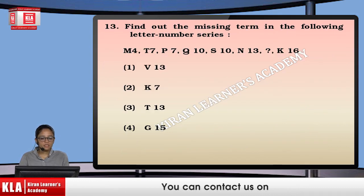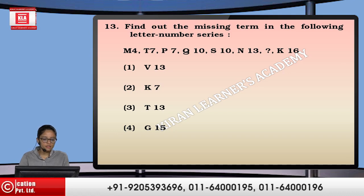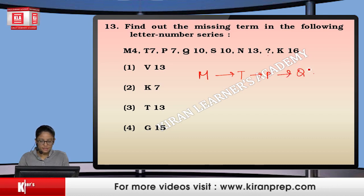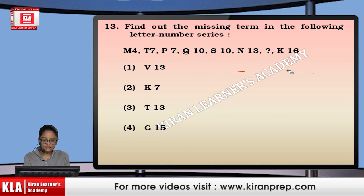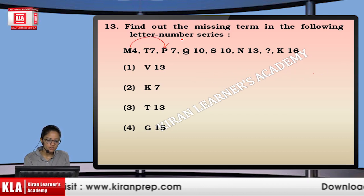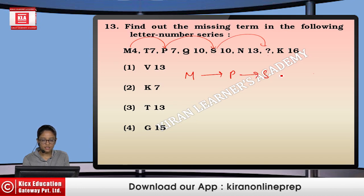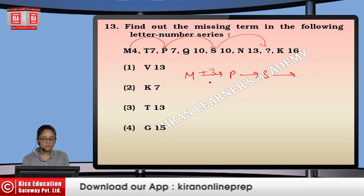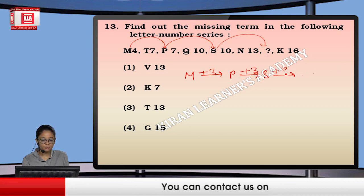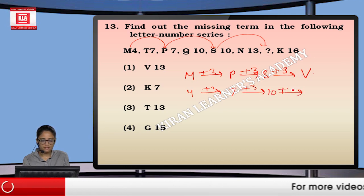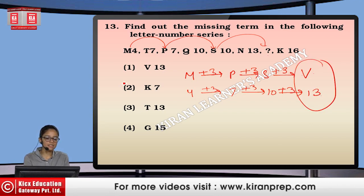Next: find the missing term in the following letter-number series. Comparing every alternate letter: M, P, S — plus 3 each time — so next is V. Comparing the numbers: 4, 7, 10 — plus 3 each time — so next is 13. The missing term is V13, which is the first option.